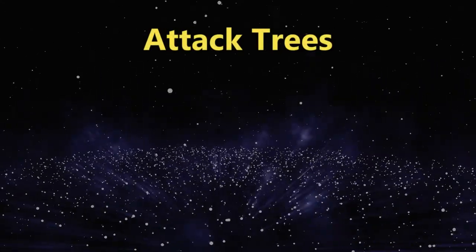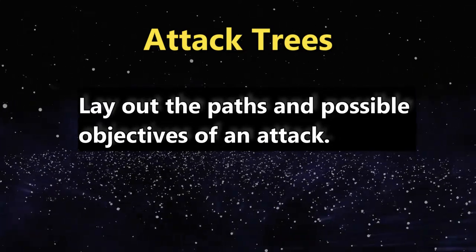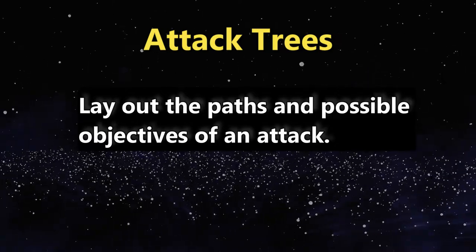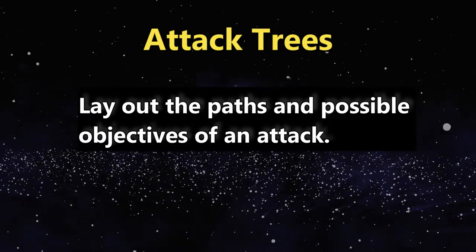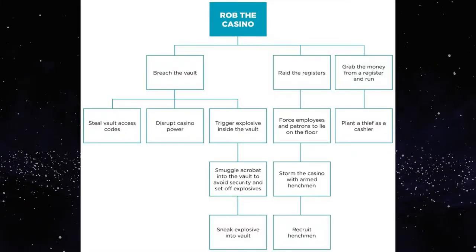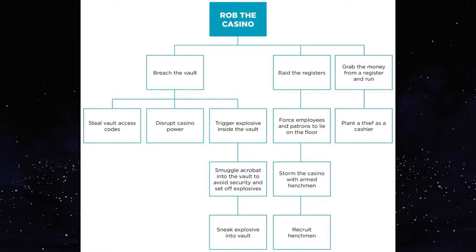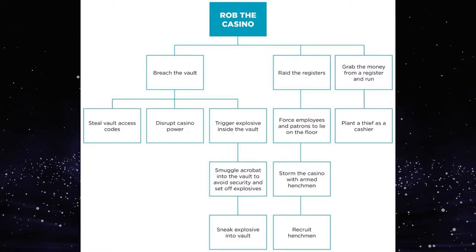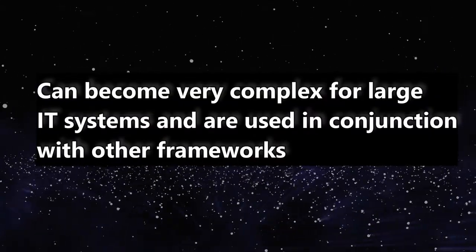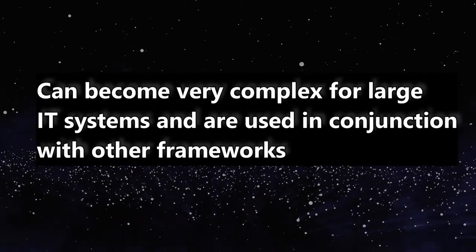Let's start with attack trees. Attack trees are a threat modeling method — they were and still are used to lay out the objectives and different paths a possible attack could play out. There can be multiple trees laid out for a single system, with each showing an attacker's likely goal and how they might achieve it. The image on screen is an example of an attack tree. These are good when presenting issues to non-technical stakeholders, though they can become very complex in a large IT system and are used in conjunction with other frameworks.